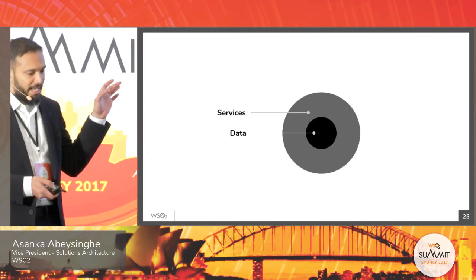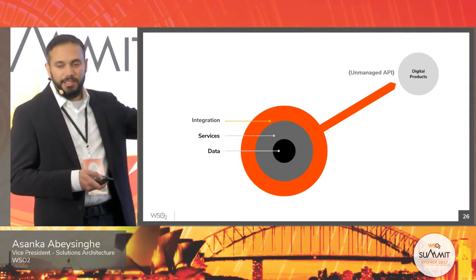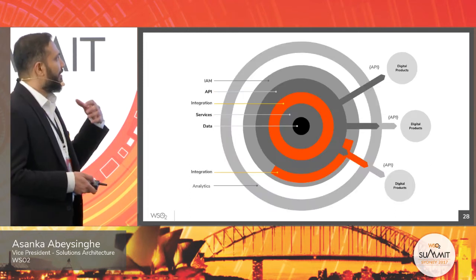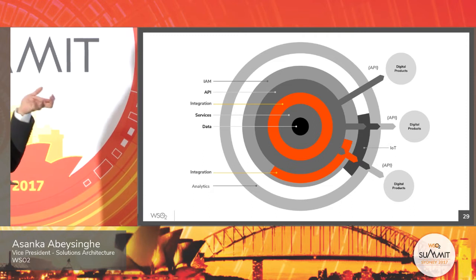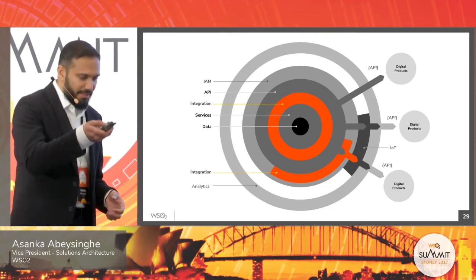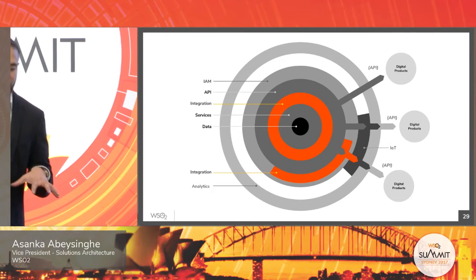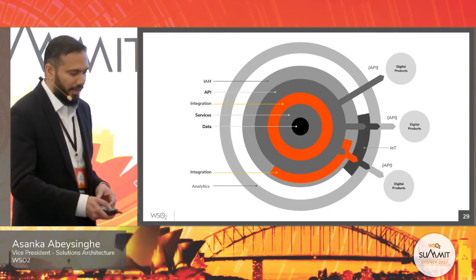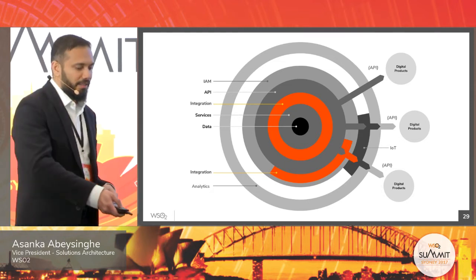Looking at the onion diagram: you have the data and services, you bring the integration layer and quickly build a digital product. Then around the integration layer you can bring APIs, identity and access management, analytics, and eventually IoT. Bring each layer based on your priority. Sanjeev mentioned that security is a really good thing to bring in early — that's good advice. But it might change based on your needs and where you are in the project, so pick the way you iterate based on your requirements.